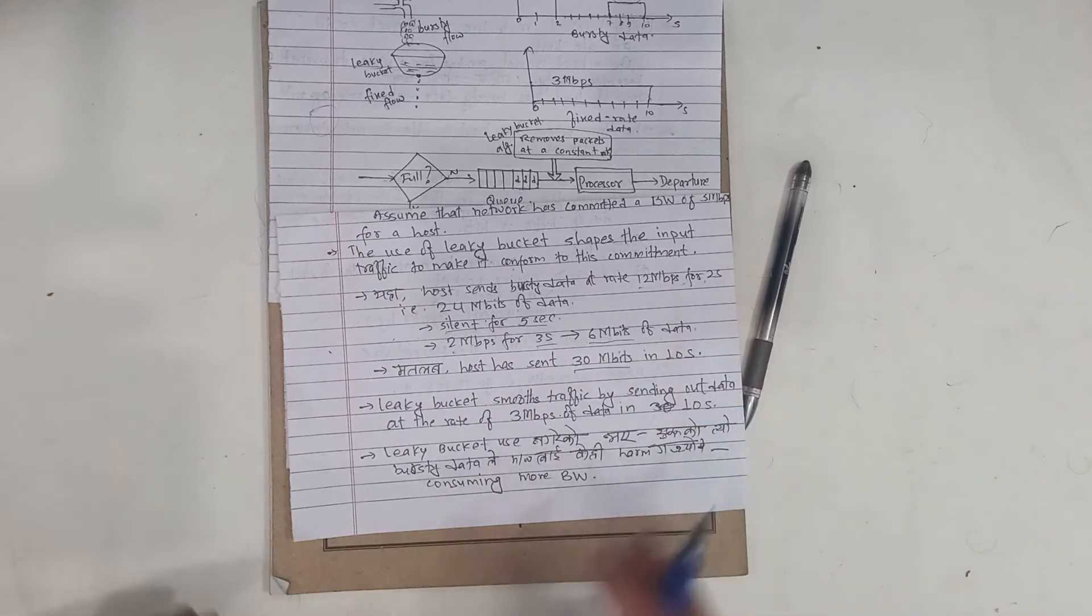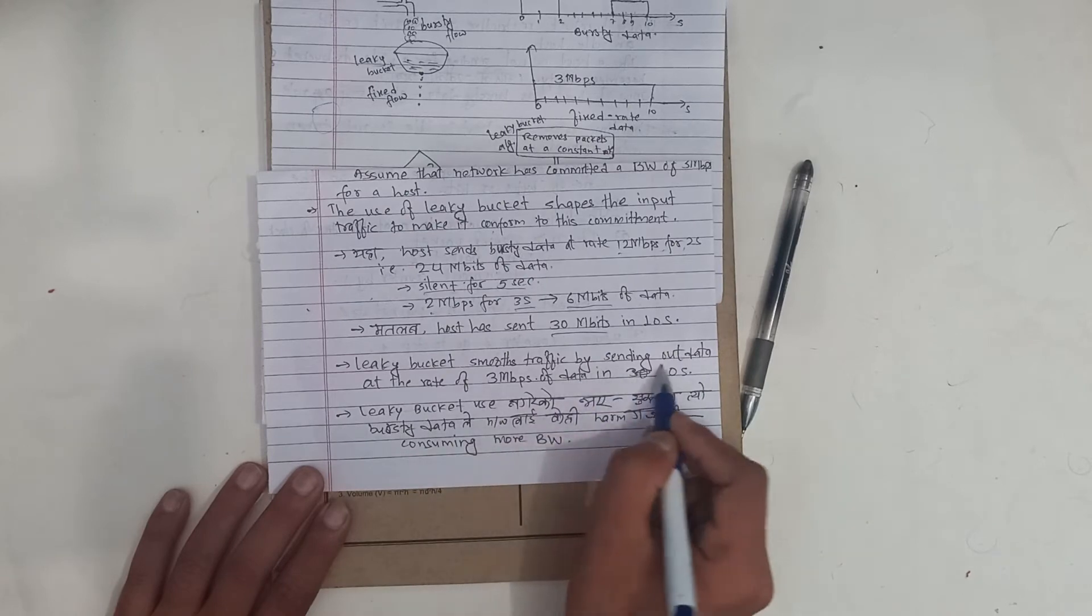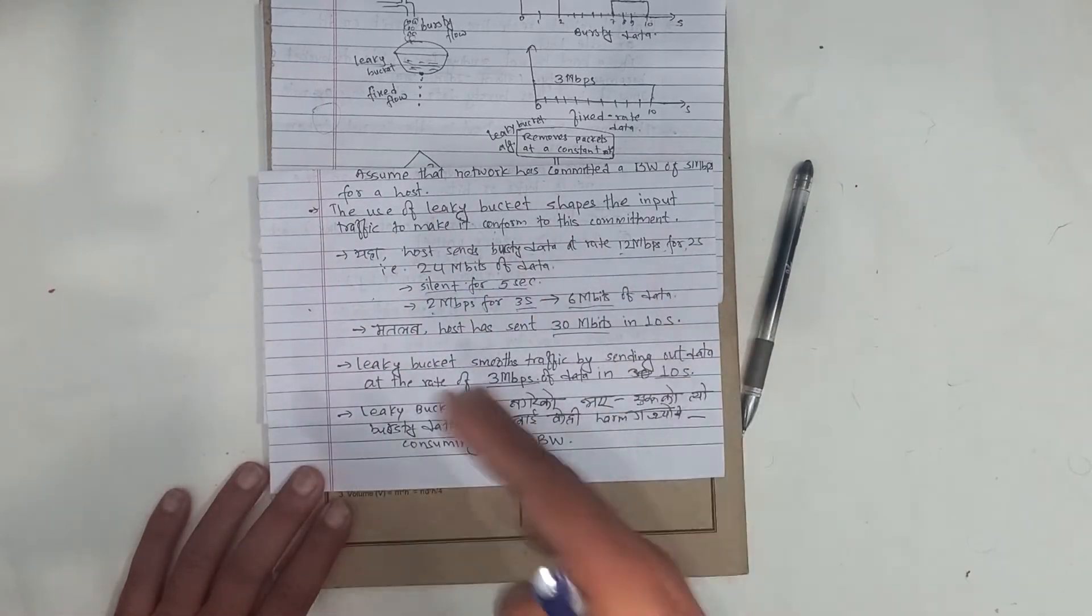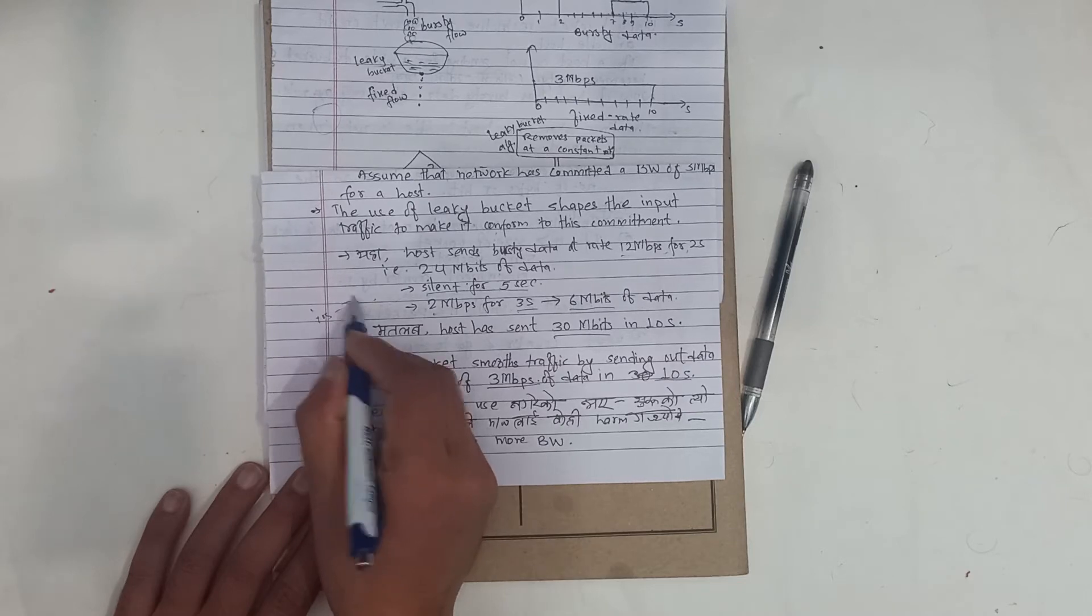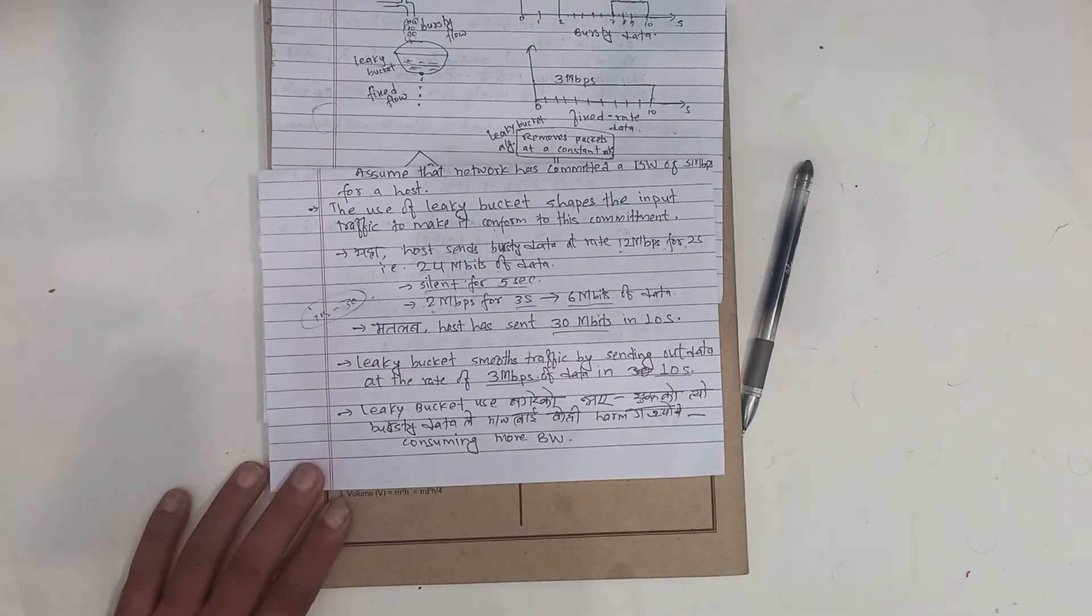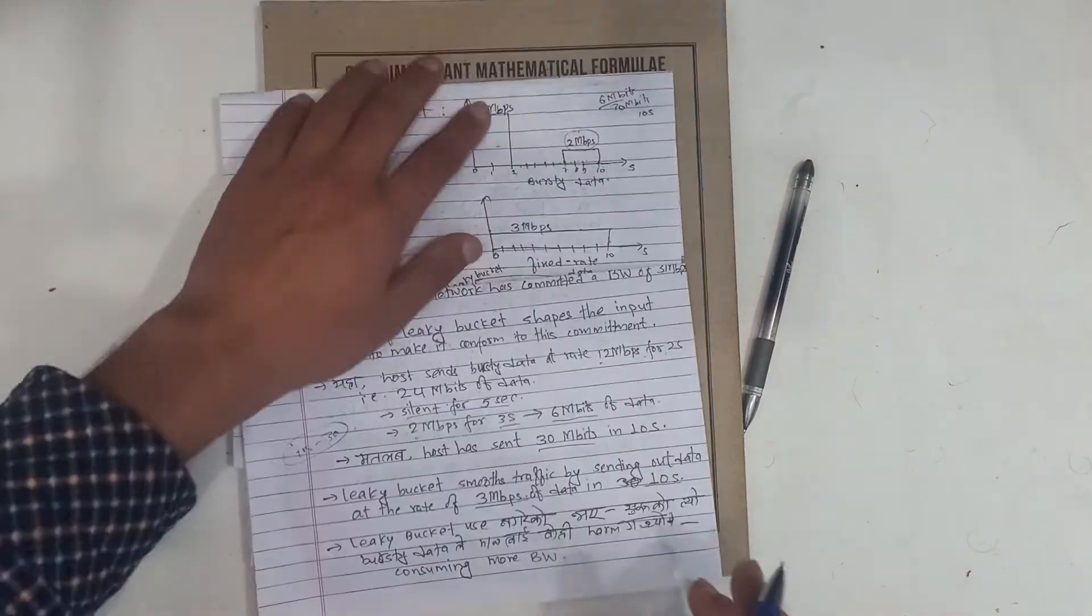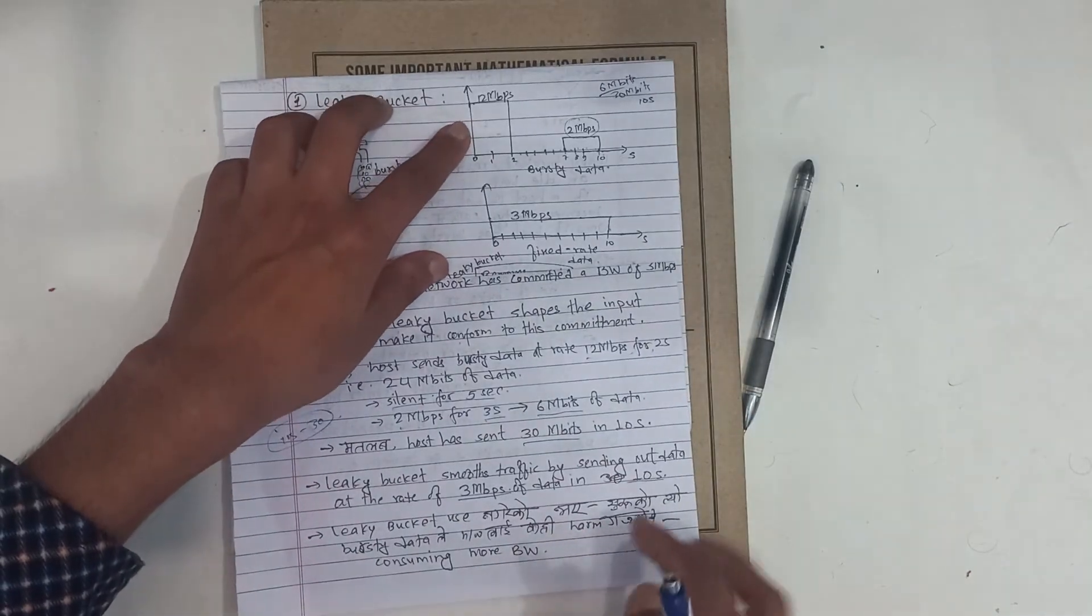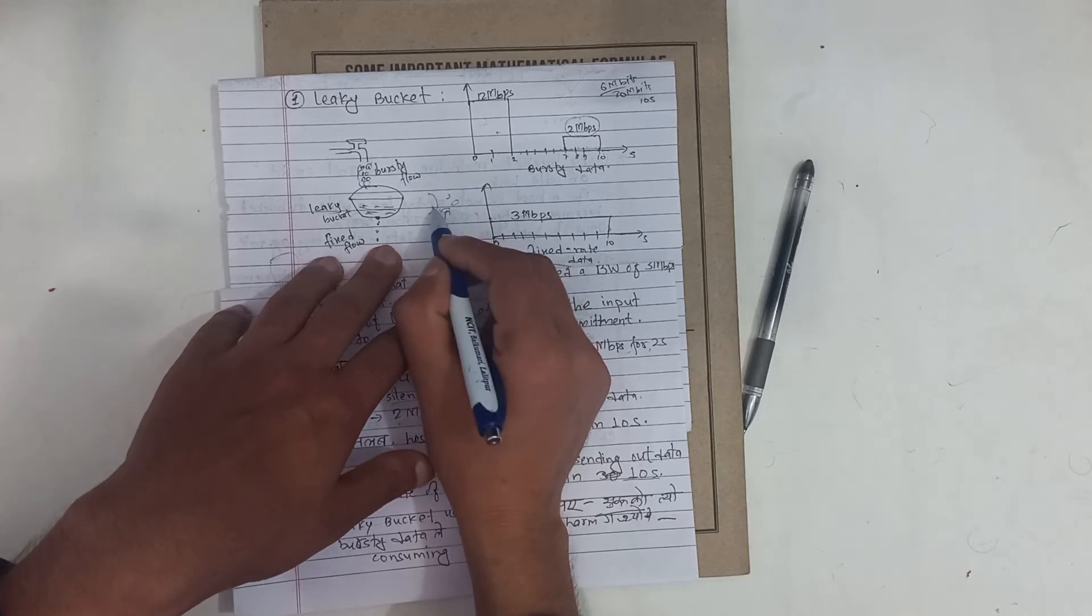The leaky bucket is smooth. Eventually over 10 seconds, 30 Mbps is transmitted. But there is a problem. The leaky bucket is smooth but in the beginning, the network consumed more bandwidth at 12 Mbps, but we only transfer at the allocated bandwidth, which is 3 Mbps, much lower.